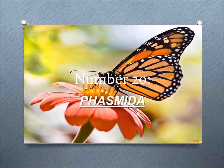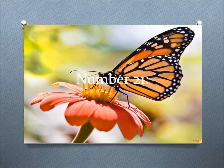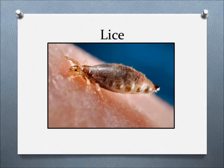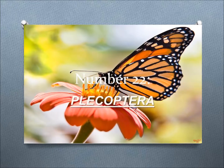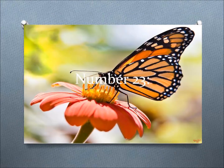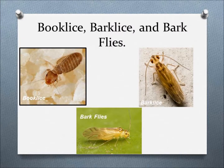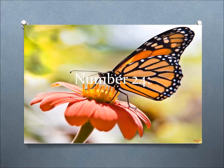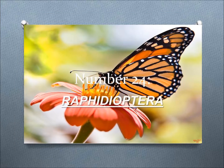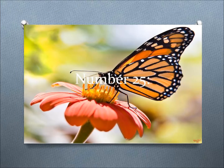Number 20: Phasmatia — example: Phasmatids. Number 21: Phthiraptera — example: Lice. Number 22: Plecoptera — example: Stoneflies. Number 23: Psocoptera — example: Book Lice, Bark Lice, and Bark Flies. Number 24: Raphidioptera — example: Snakeflies. Number 25: Siphonaptera — example: Fleas.